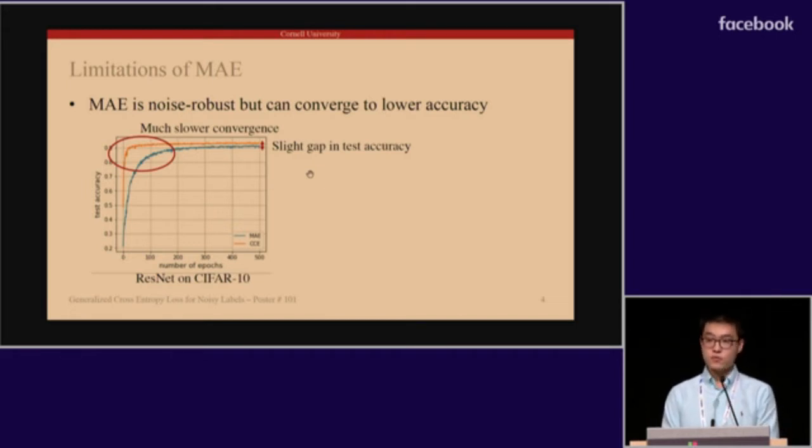To see this, we empirically examined the performance of mean absolute error against cross-entropy using ResNet on CIFAR-10 for clean-labeled data. The orange and blue curve shows the test accuracy against number of epochs for both cross-entropy and mean absolute error. Not only does using mean absolute error lead to much slower convergence, but there is also a slight decrease in test accuracy.